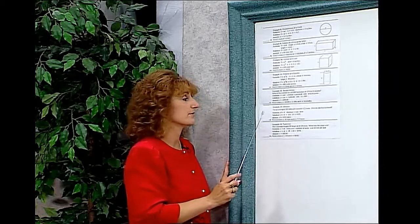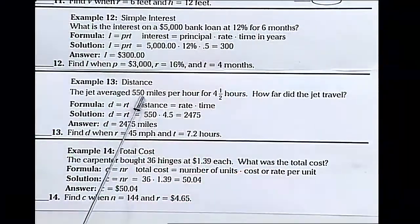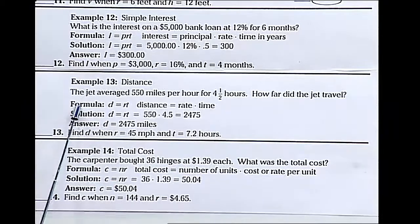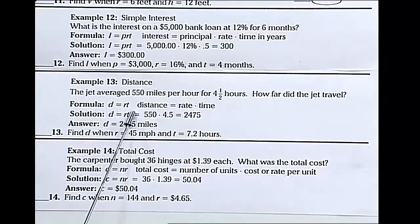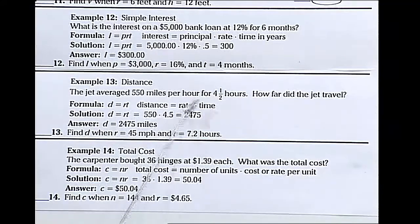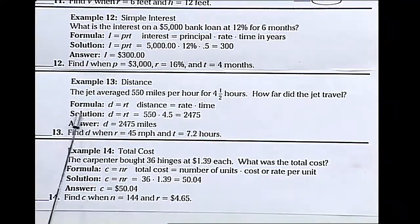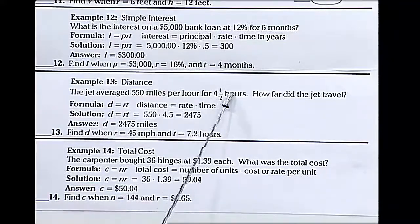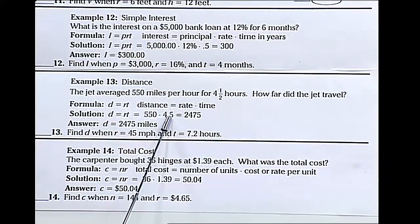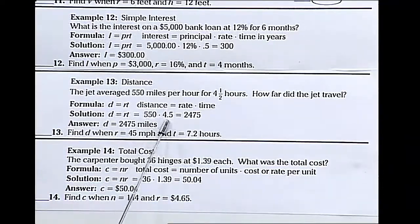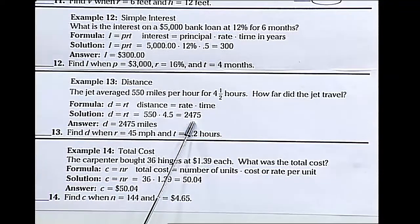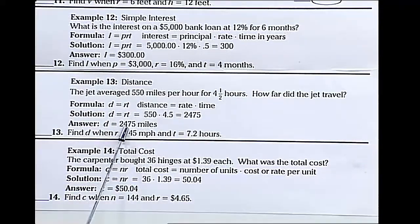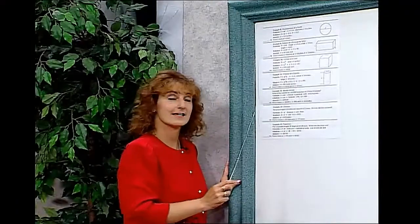Distance is another formula we could use. The jet averaged 550 miles per hour for four-and-a-half hours. How far did the jet travel? The formula for distance is rate times time. Rate being how fast you're traveling, time being how long you're traveling. The rate was 550 miles per hour, the time we traveled for four-and-a-half hours. 550 times 4.5 is 2,475. Our answer is 2,475 miles.